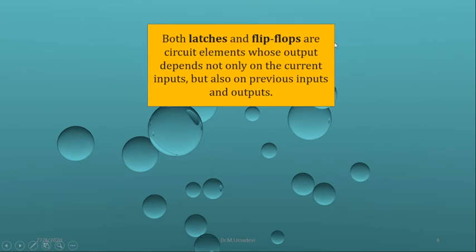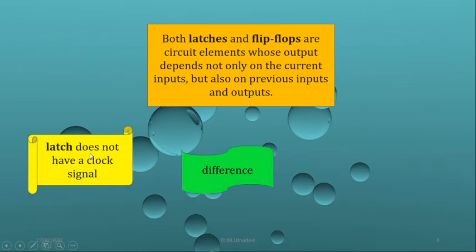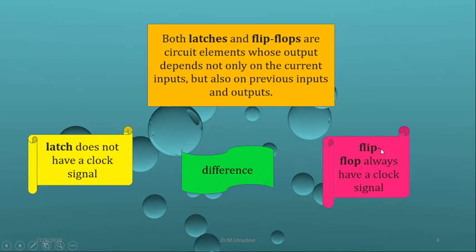Both latches and flip-flops are circuit elements whose output depends not only on the current inputs but also on previous inputs and outputs. The main difference between latches and the flip-flop is latches do not have a clock signal, whereas the flip-flop always has a clock signal. This is the main difference between latches and the flip-flop.